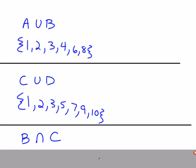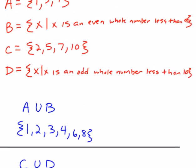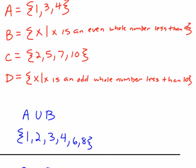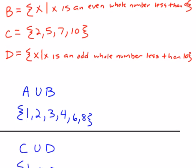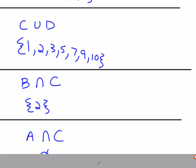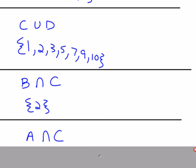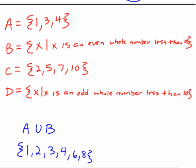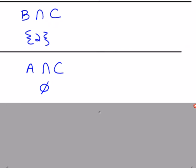For B intersection C, numbers must appear in both sets. B is {2, 4, 6, 8} and C is {2, 5, 7, 10}, so the only shared number is 2. For A intersection C — A is {1, 3, 4} and C is {2, 5, 7, 10} — there is no overlap, so the result is the empty set.